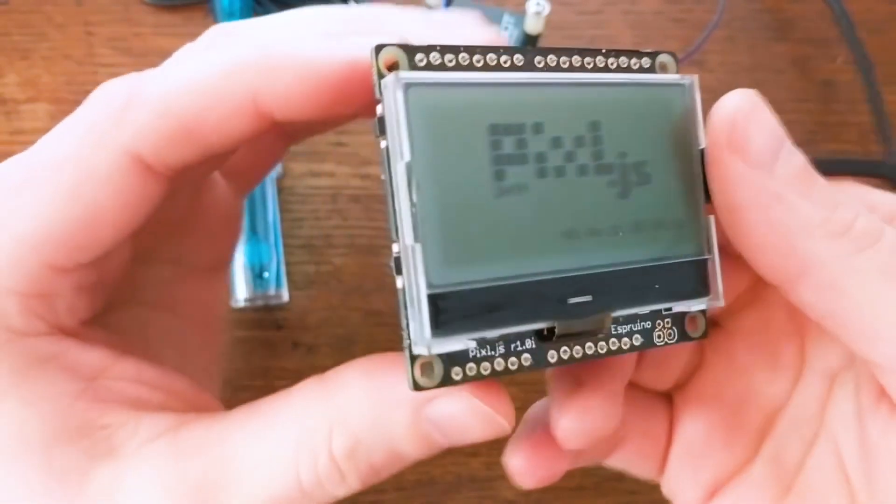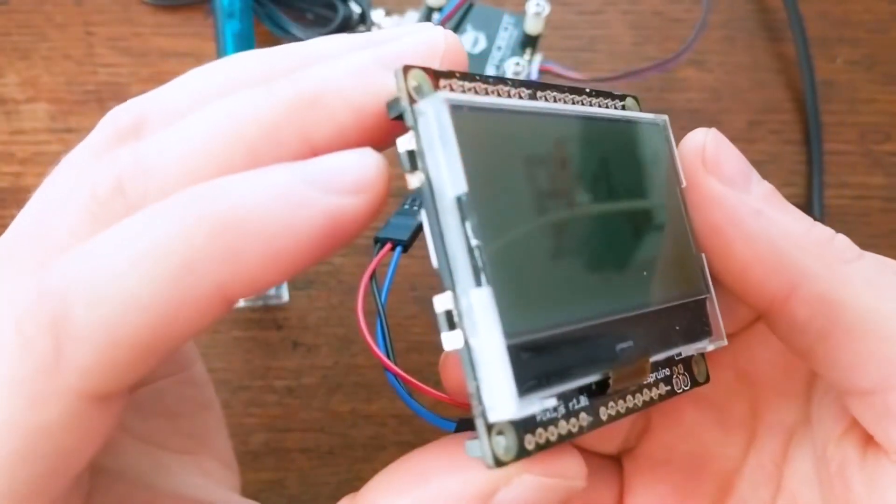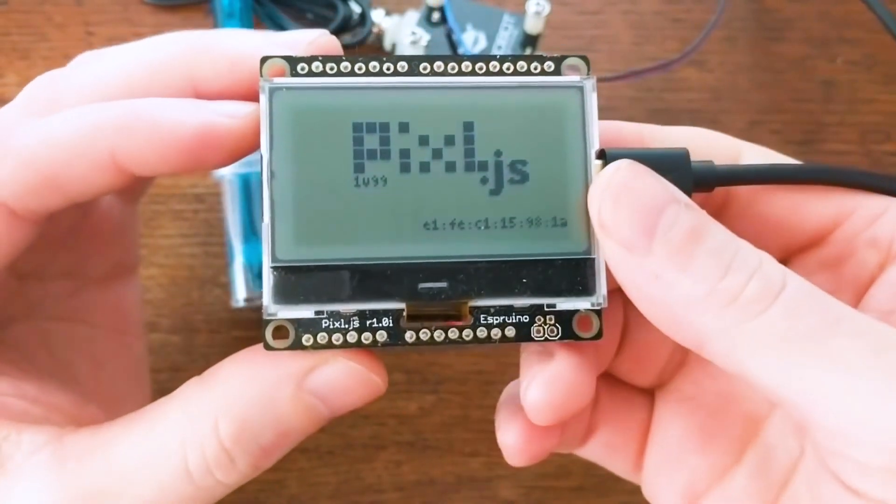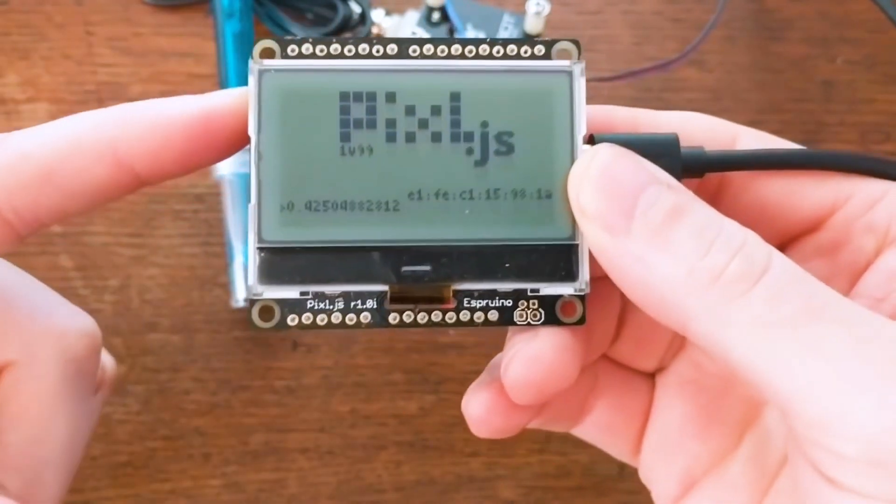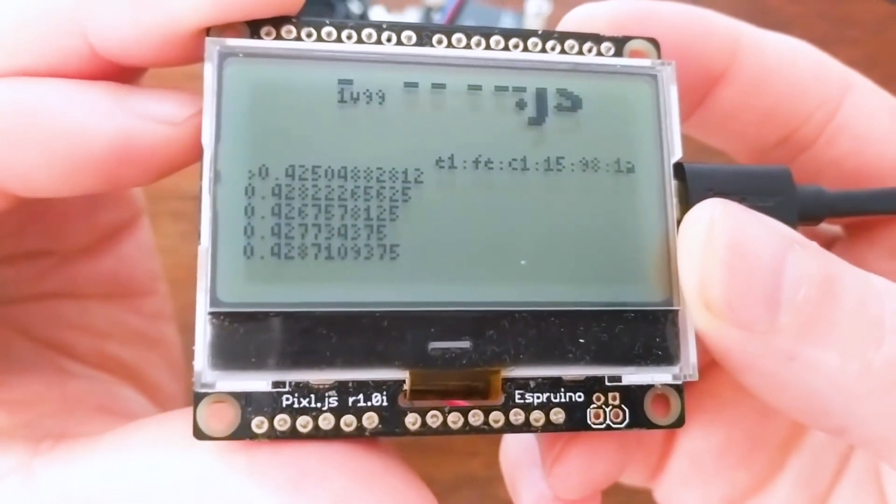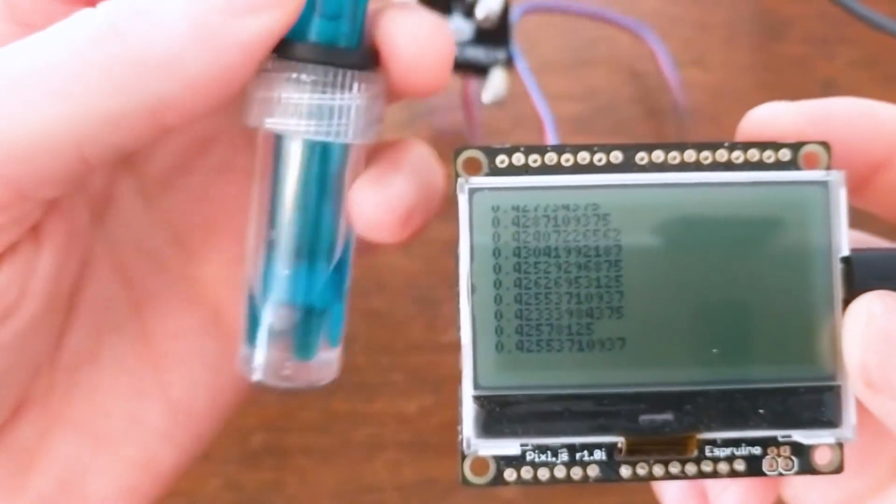So here I've got the Pixel with my code loaded in, and this is where button 1 is. So you can see when I press that button, it prints out the reading from our analog input. And it'll do that every single time I press the button. Right now the probe is still in that neutral solution that it came in, which is probably just water.